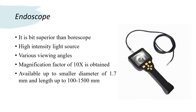After the boroscope, the next one is the endoscope. The endoscope is much like a boroscope except that it has a superior optical system and a high-intensity light source. It also provides various viewing angles as discussed in the case of the boroscope. A unique feature of the endoscope is that objects are constantly in focus from about 4 mm to infinity. When the tip is about 4 mm from the surface being inspected, a magnification factor of about 10x is achieved.